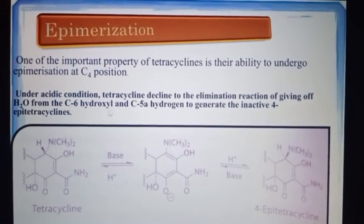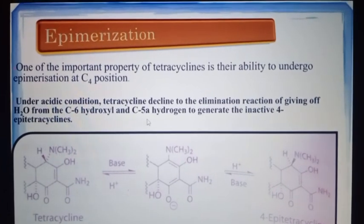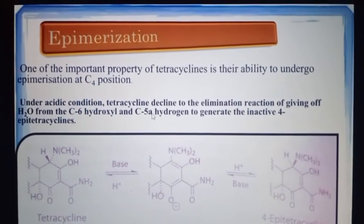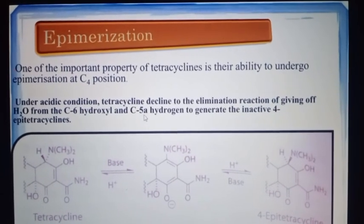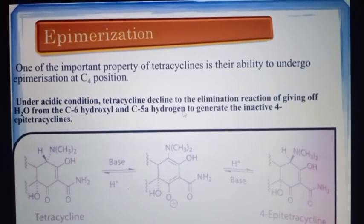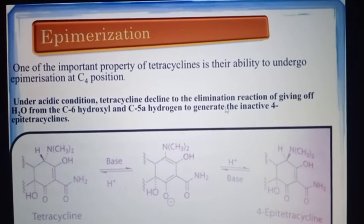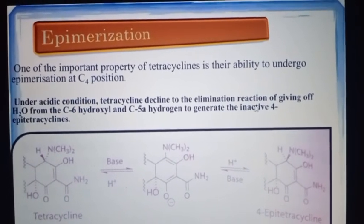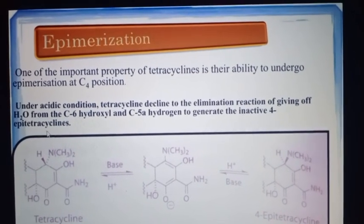In this elimination, the OH minus comes from the C6 hydroxyl group, and the hydrogen (H+) comes from the C5A position. The C5A hydrogen (hydrosine) is removed along with water, forming the inactive product — 4-epitetracycline.